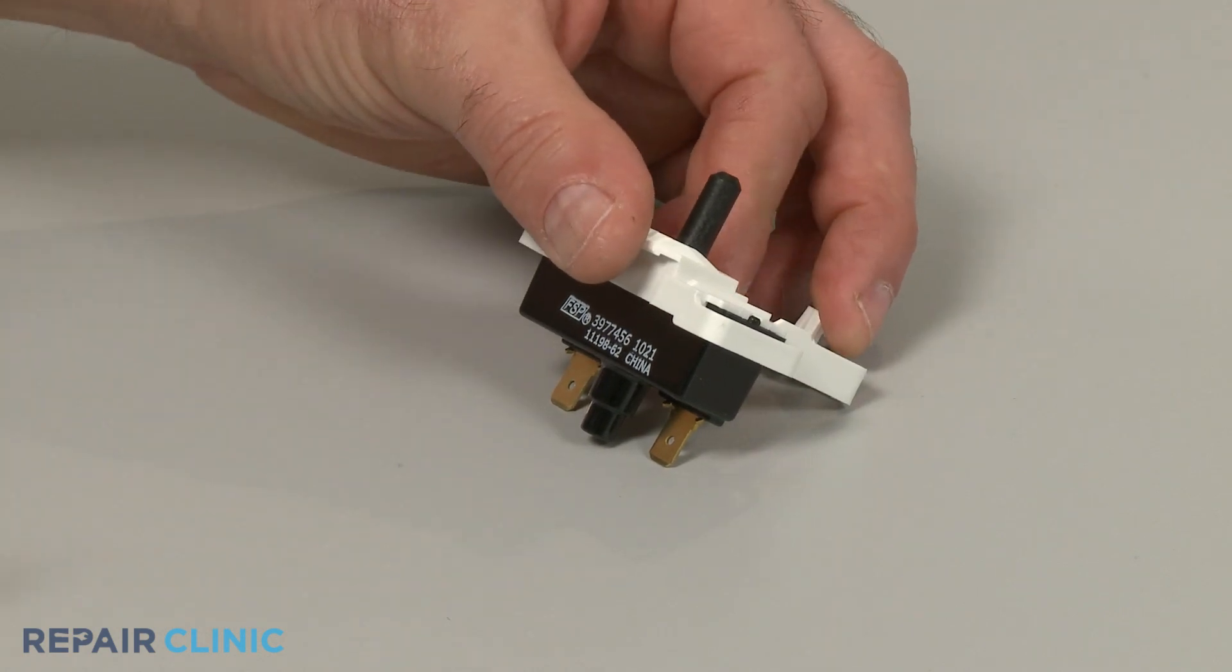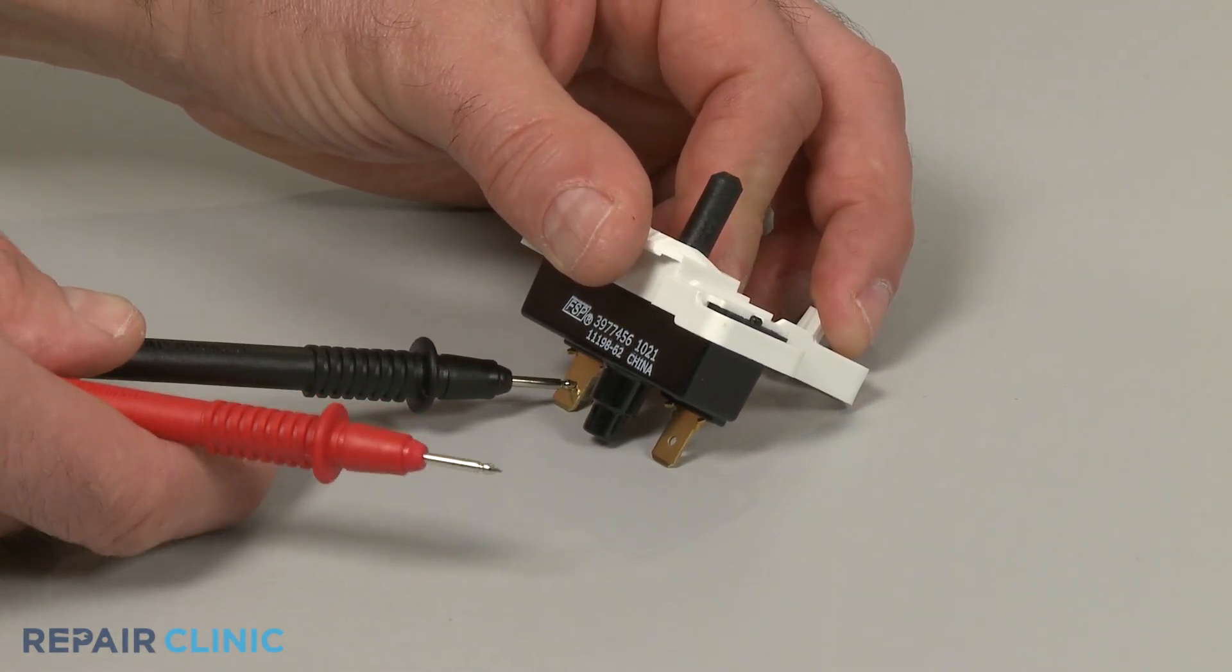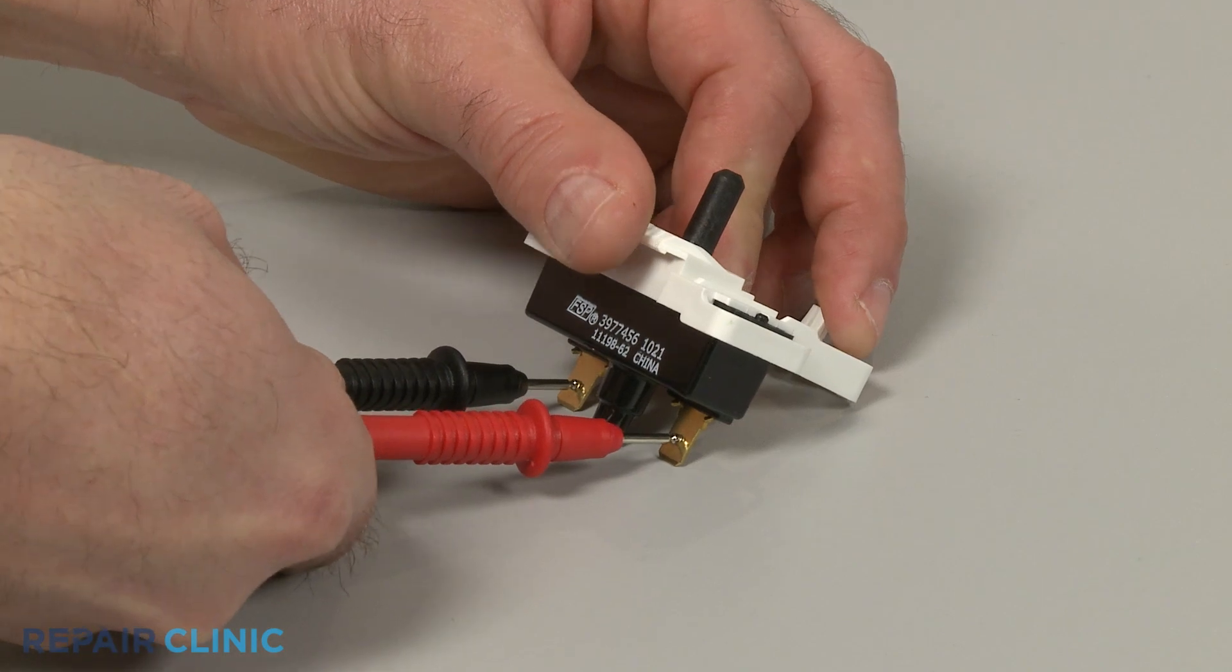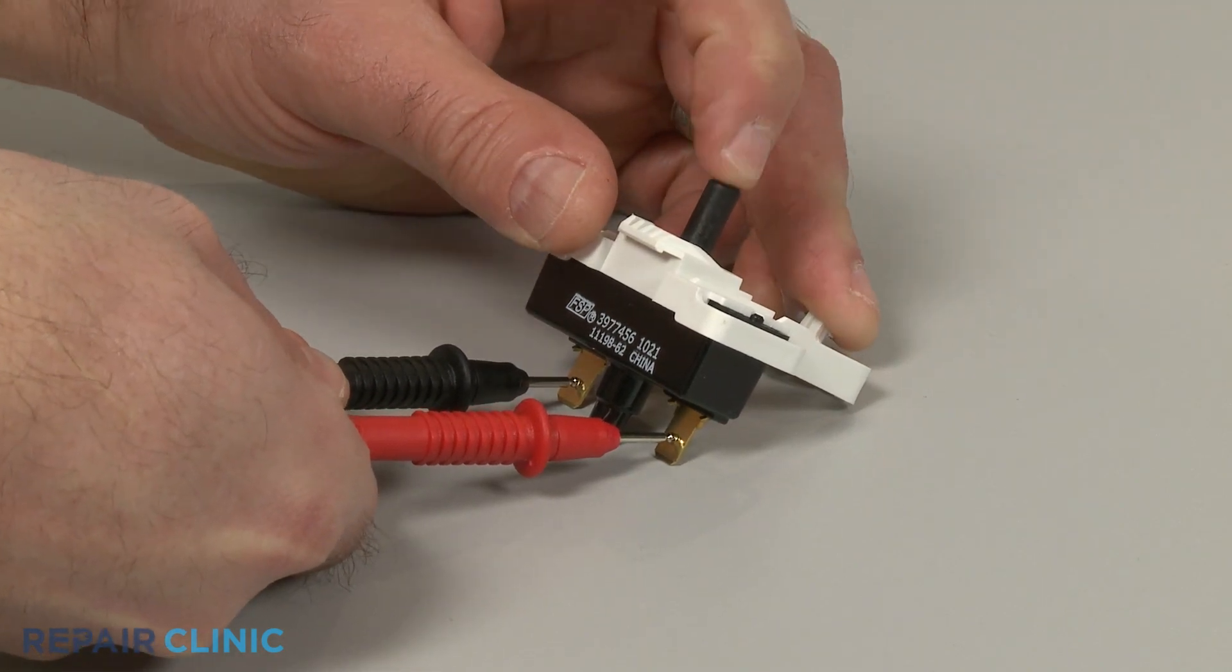Use a probe to touch one of the switch's terminals and the second probe to touch the other terminal. Now actuate the switch.